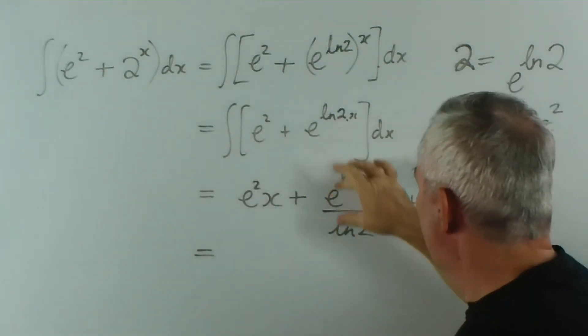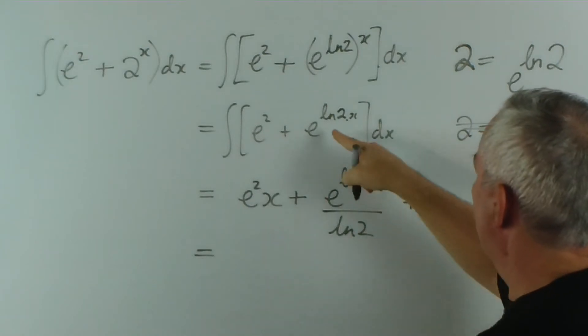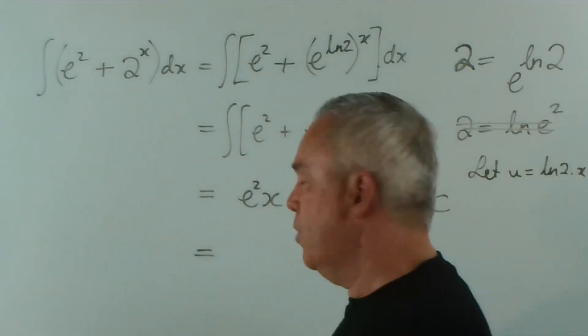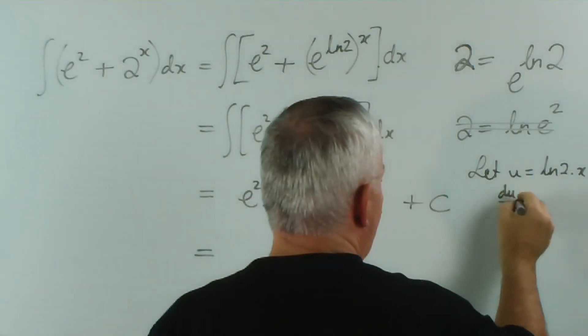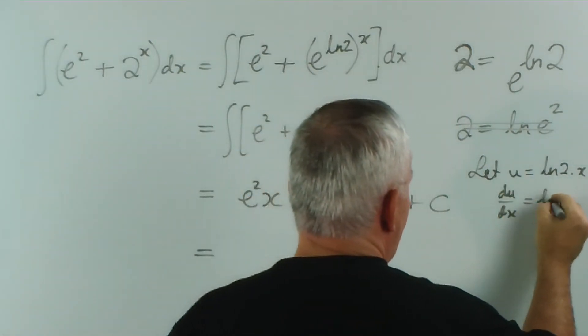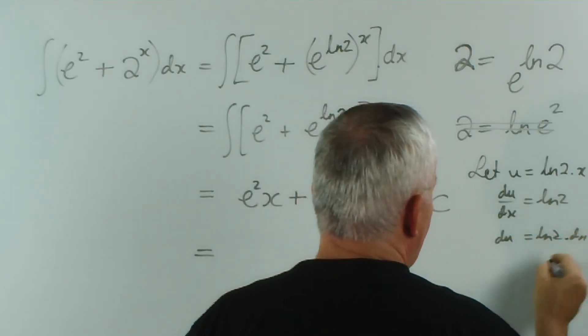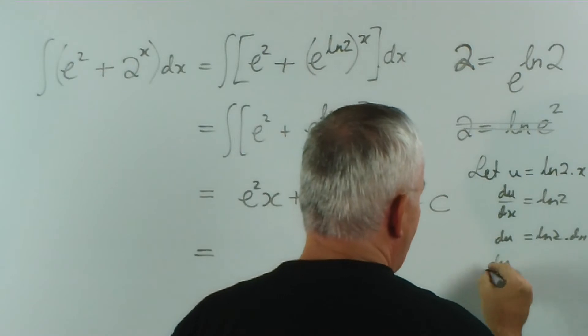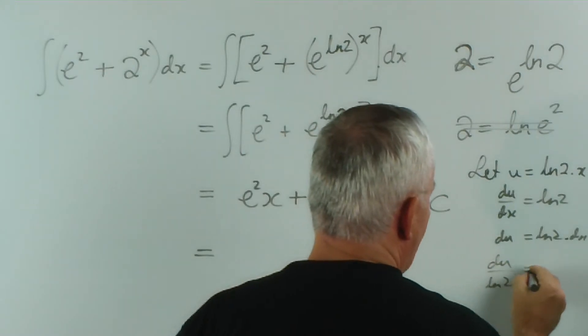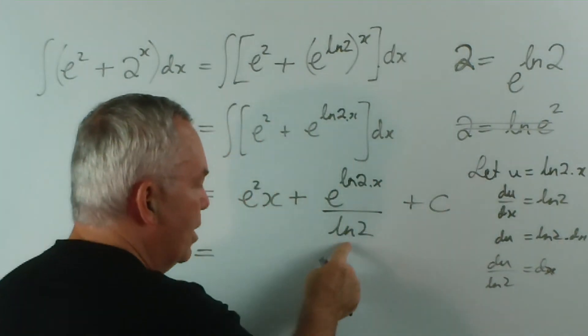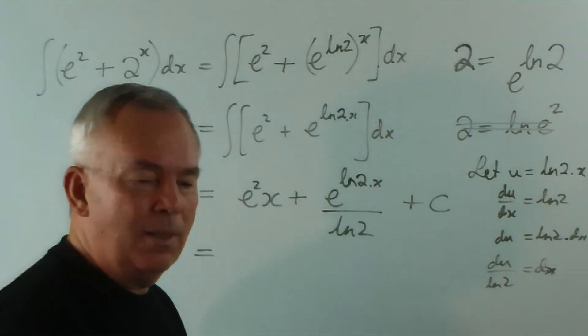You could do this step by replacing this with a u. So, you could do a substitution. Let u equal log of 2 times x, and so forth. The du dx would be log 2. So, du equals log 2 dx. Divided by log 2, du over log 2 would be dx. And, you could replace that dx with du on log 2, and that's where this log 2 comes from, on the bottom.